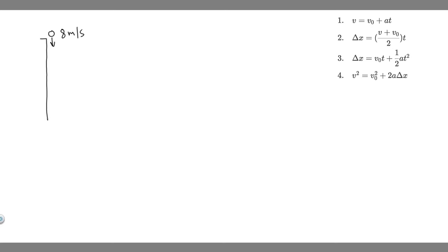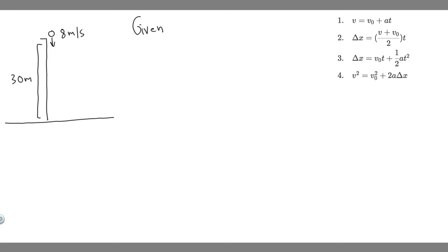So 8 meters per second, and it's going to be thrown from a height of 30 meters — this whole distance is 30 meters. It's going to travel all the way down and hit the ground. Now let's write out all of our given variables.